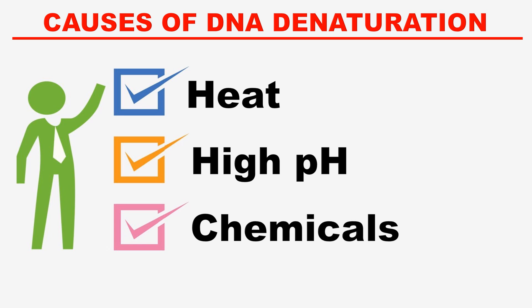The next cause is chemicals. By different chemicals we can also cause DNA denaturation. For example, formamide lowers the melting temperature of DNA — as its concentration increases, the melting point decreases, ultimately causing denaturation. Similarly, dimethyl sulfoxide (DMSO) also lowers the melting temperature. Salts interfere with hydrogen bonding through their ions. Finally, urea acts as a hydrogen donor and acceptor, breaking the hydrogen bonds between the two strands of DNA.